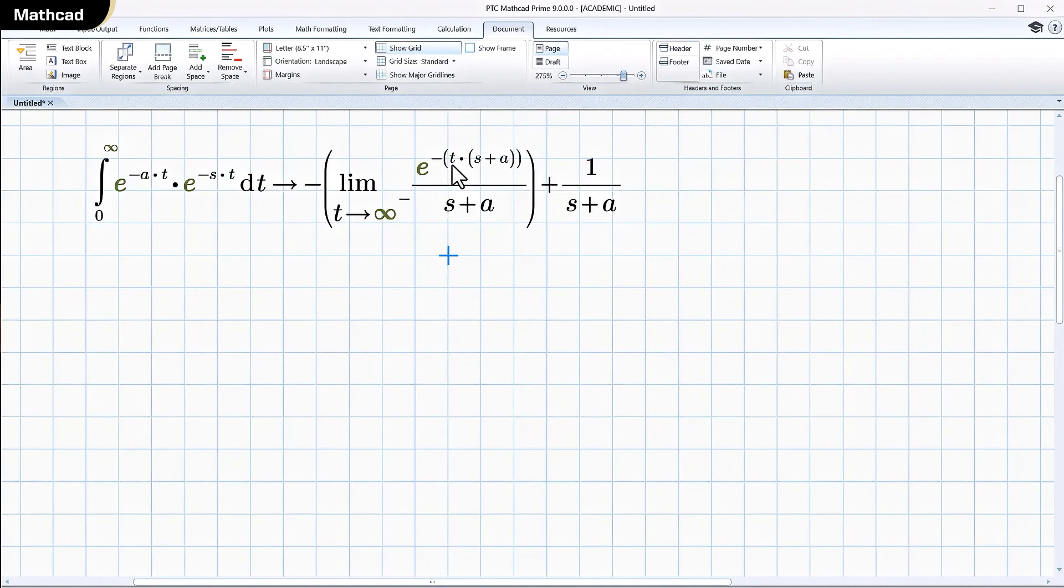Right there, as t goes to infinity, it really doesn't matter what s and a are. As t goes to infinity, e to the minus t goes to zero. Now that's if s plus a is positive.